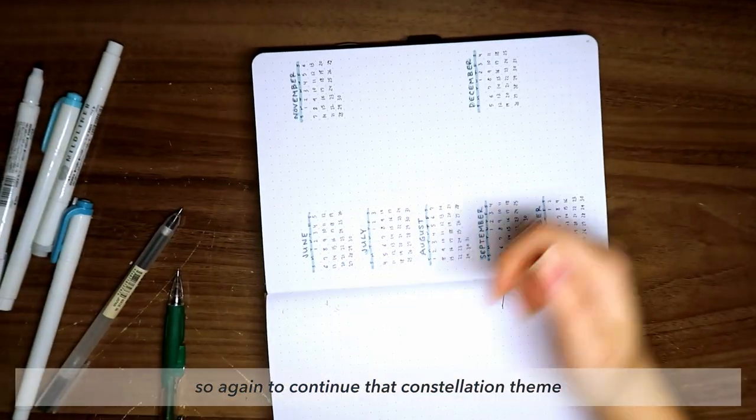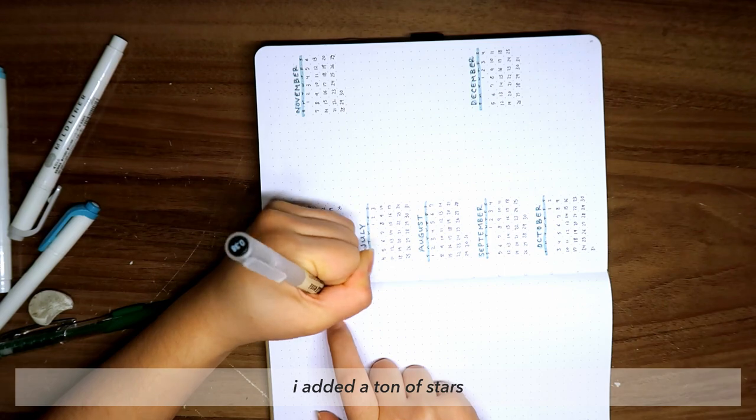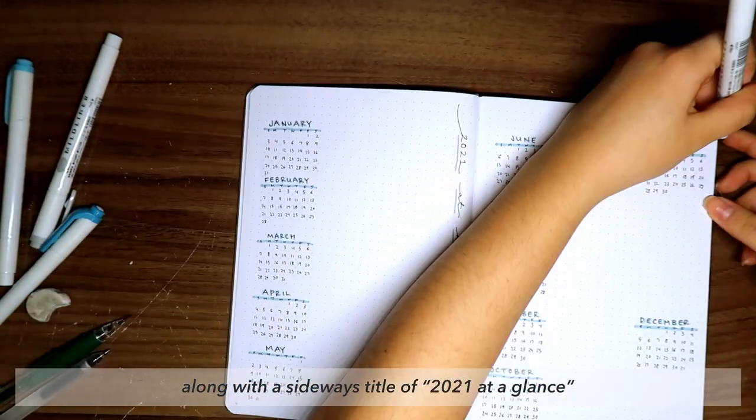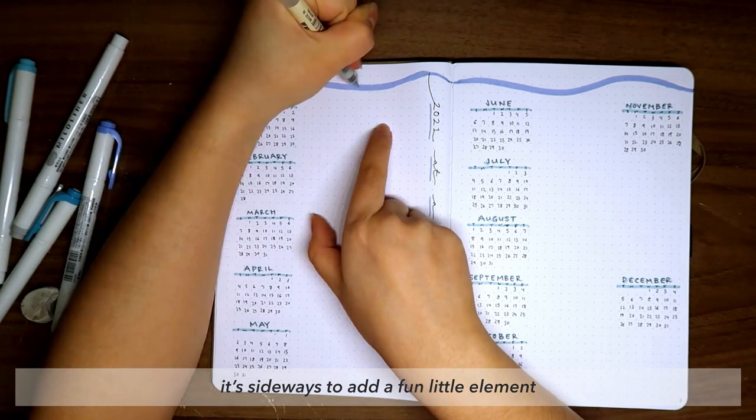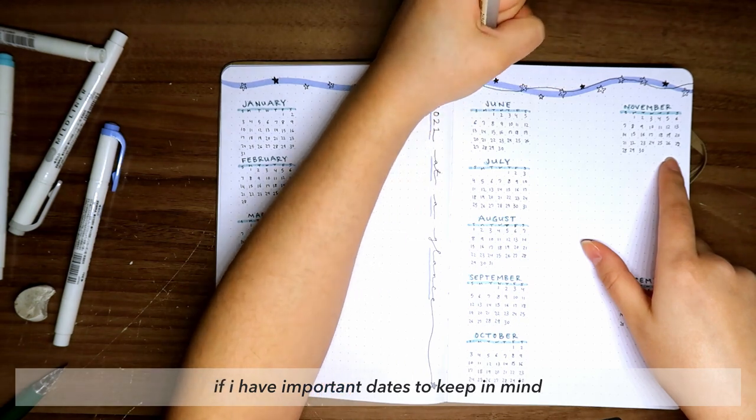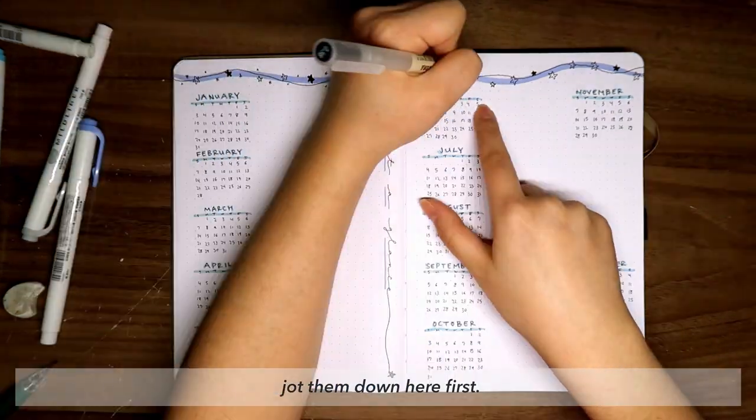So again, to continue that constellation theme, I added a ton of stars and sparkles and little dots at the top, along with a sideways title of '2021 at a glance.' It's sideways to add a fun little element of something different. And as I mentioned earlier, if I have important dates to keep in mind throughout the year, I can jot them down here first.